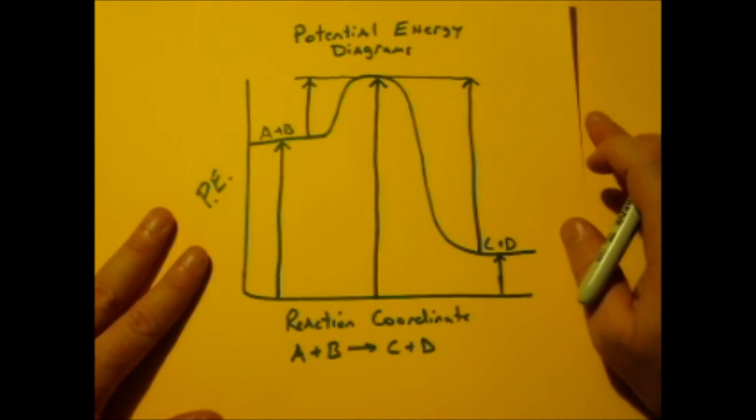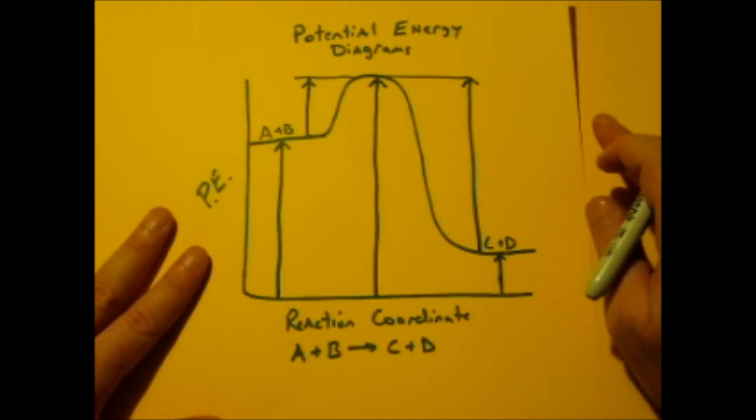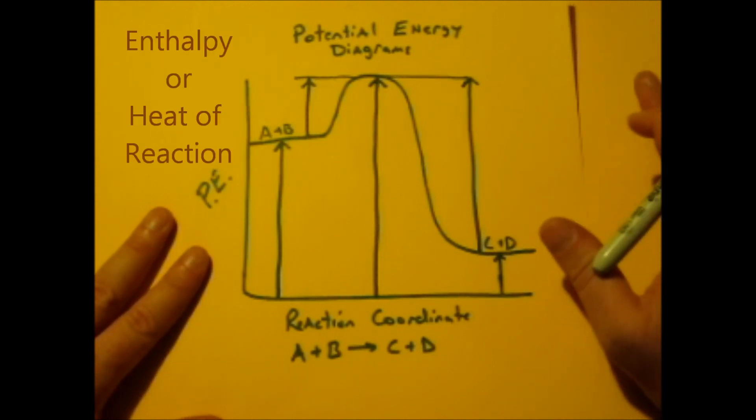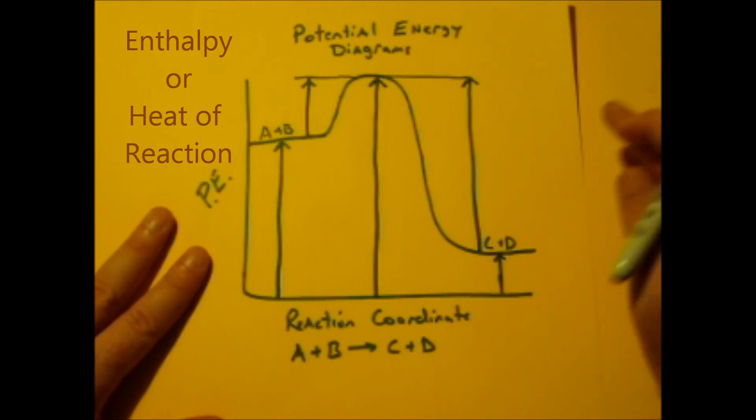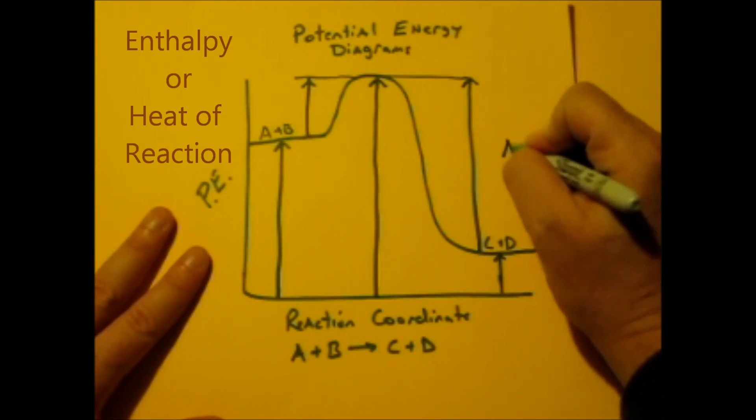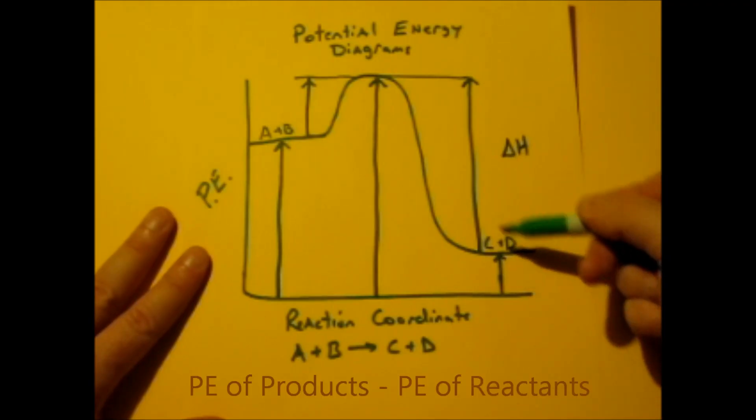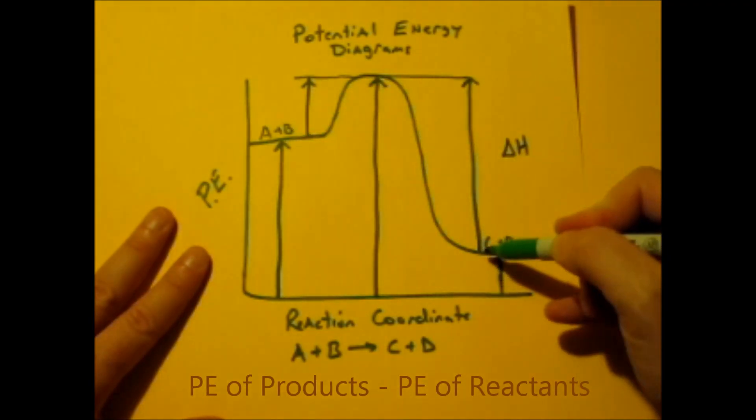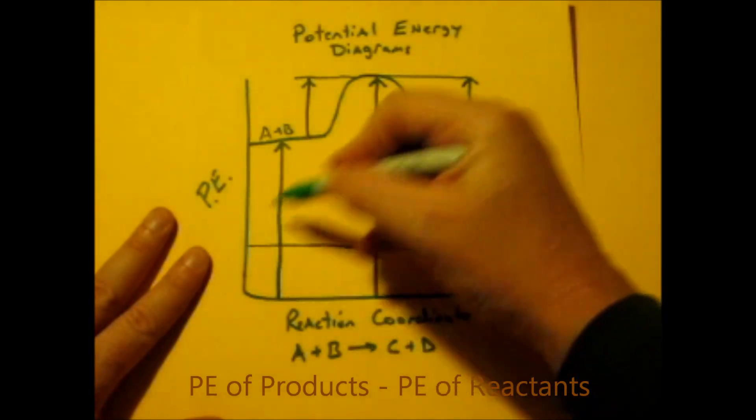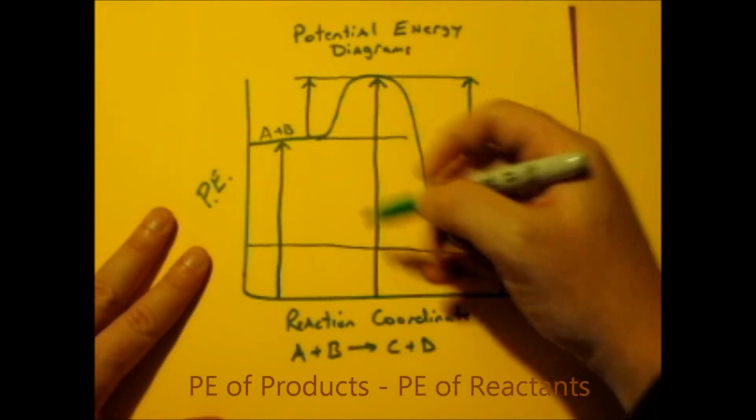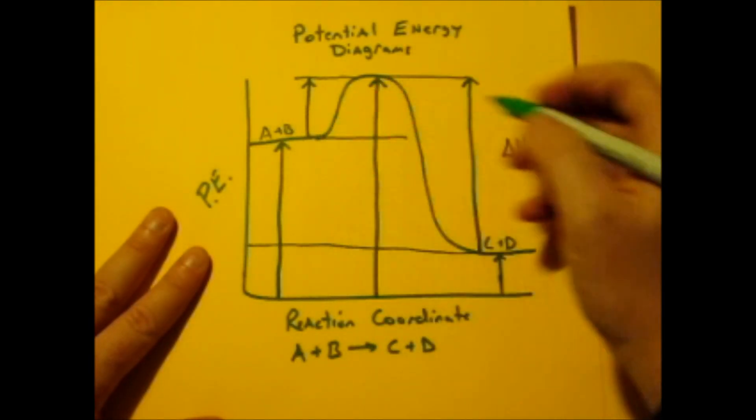The final energy you're going to have to account for is the enthalpy, or the heat of reaction. That's also known as delta H. Delta H is the difference between your products and your reactants. So what you do is you draw a line across from the products, you draw a line across from the reactants, and this difference right here is your delta H.